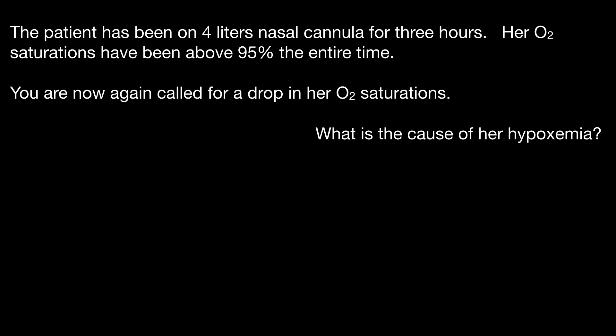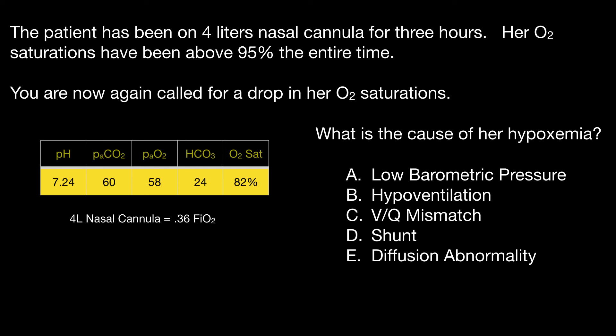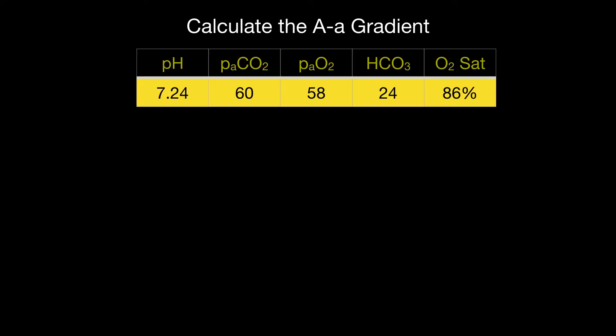Let's go back to the case. This patient was on four liters of oxygen saturating 95%, and then suddenly her oxygen saturations dropped. To know the cause of hypoxemia, one of the best ways is to get a blood gas. Her PaO2 is 58 and her oxygen saturations are 82%. To identify the cause, we also need to calculate the alveolar gas partial pressure. At 4 liters nasal cannula, the fraction of inspired oxygen is about 0.36.